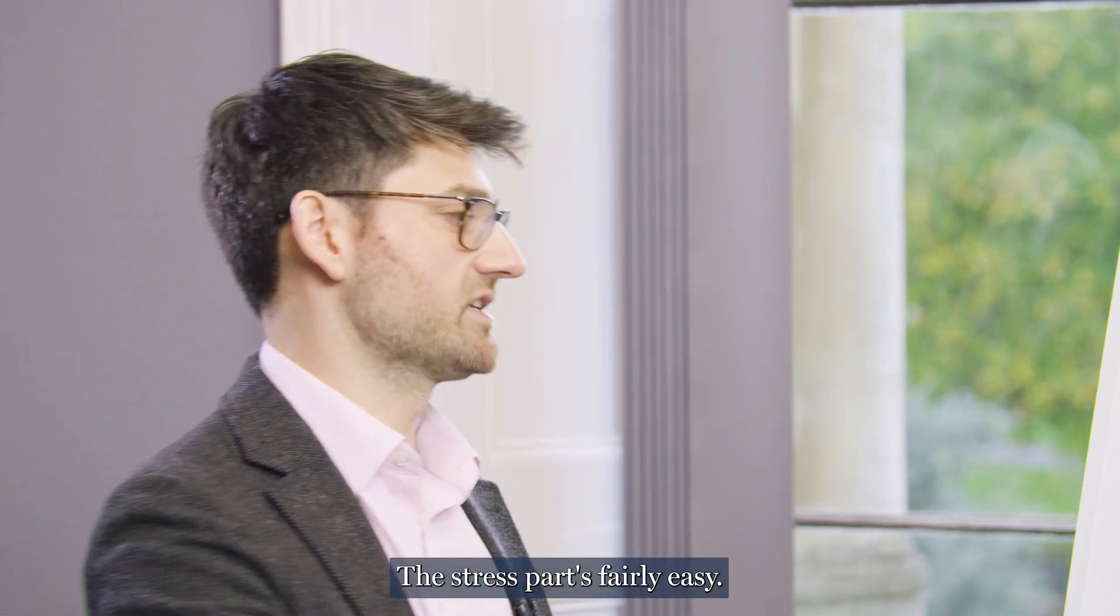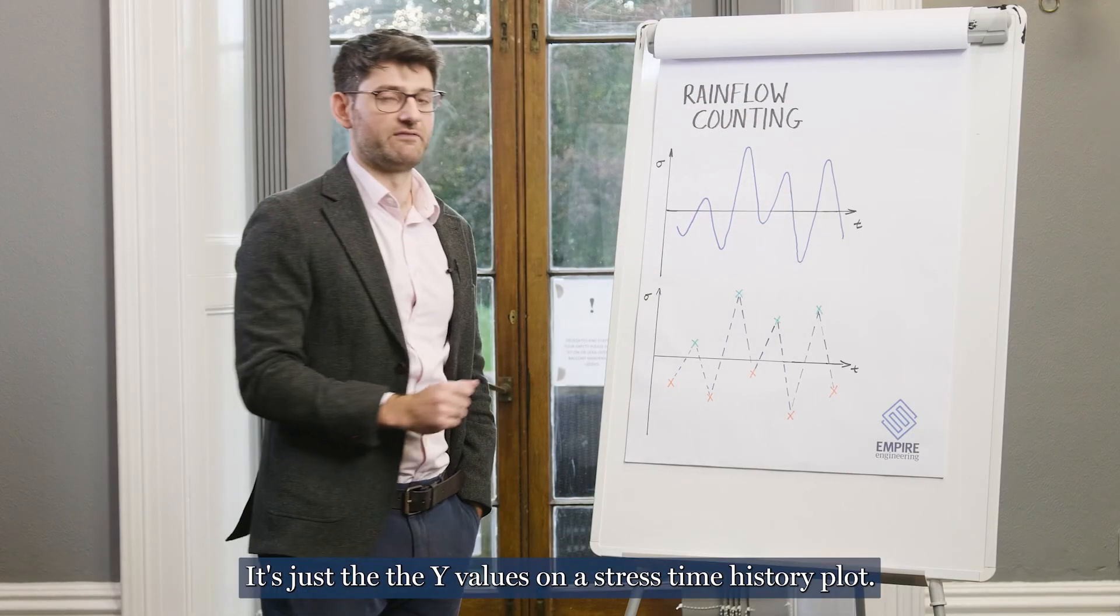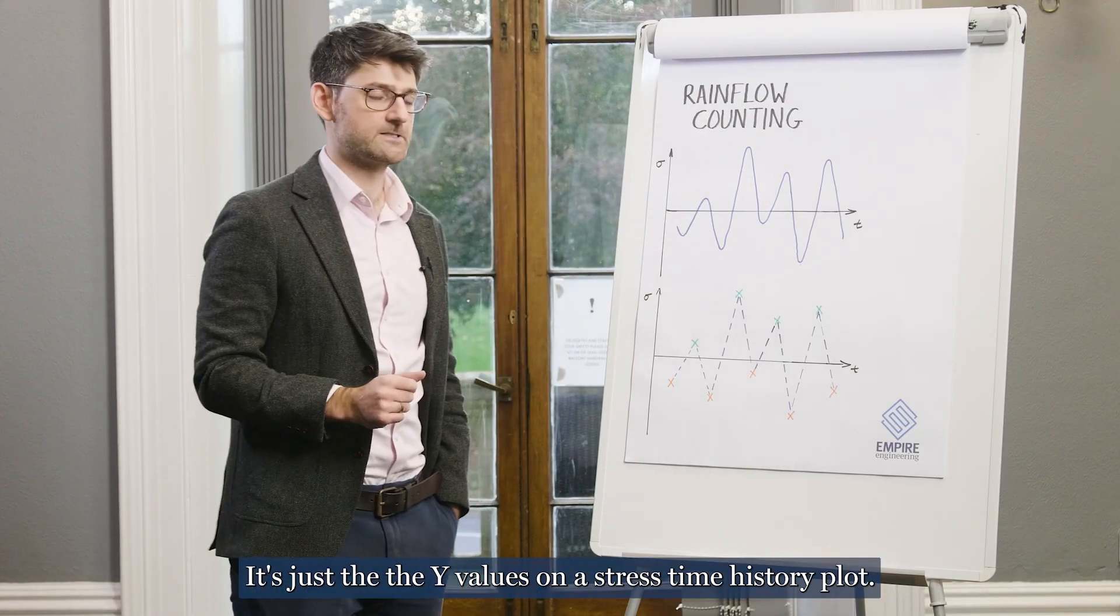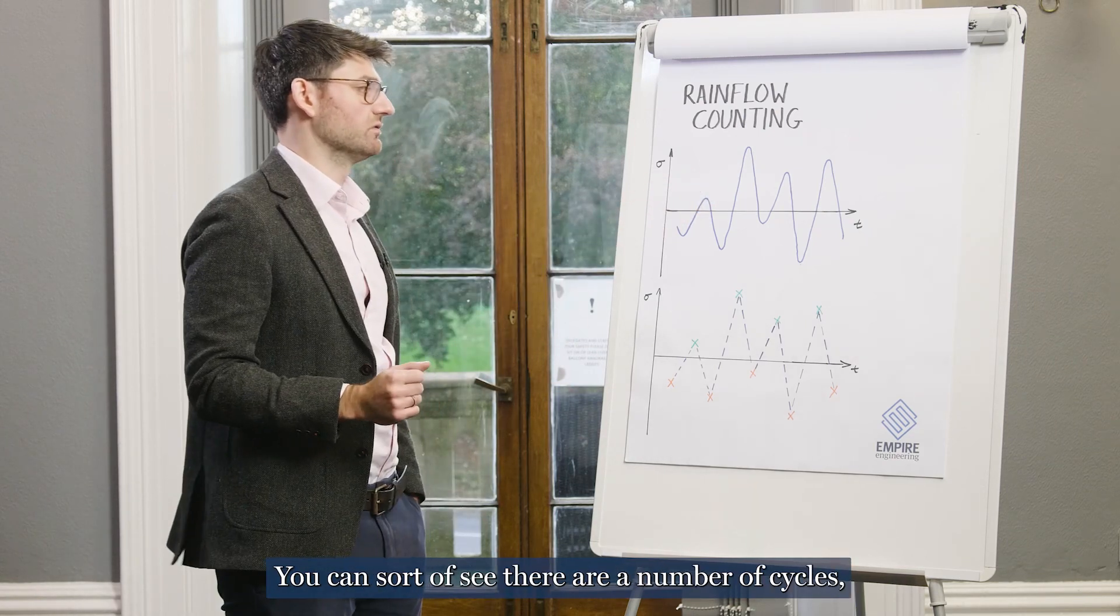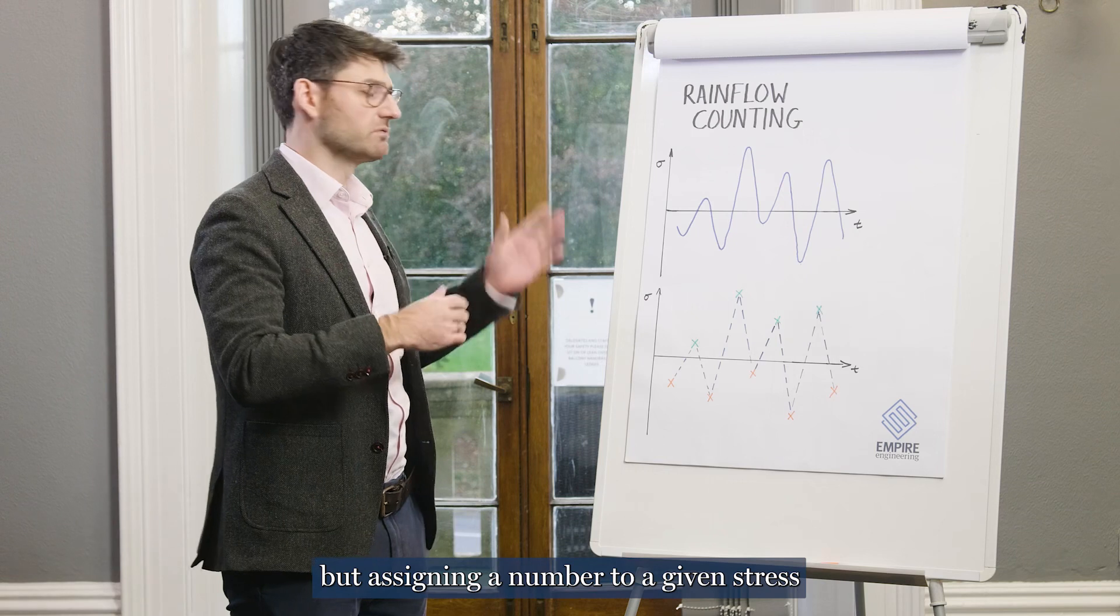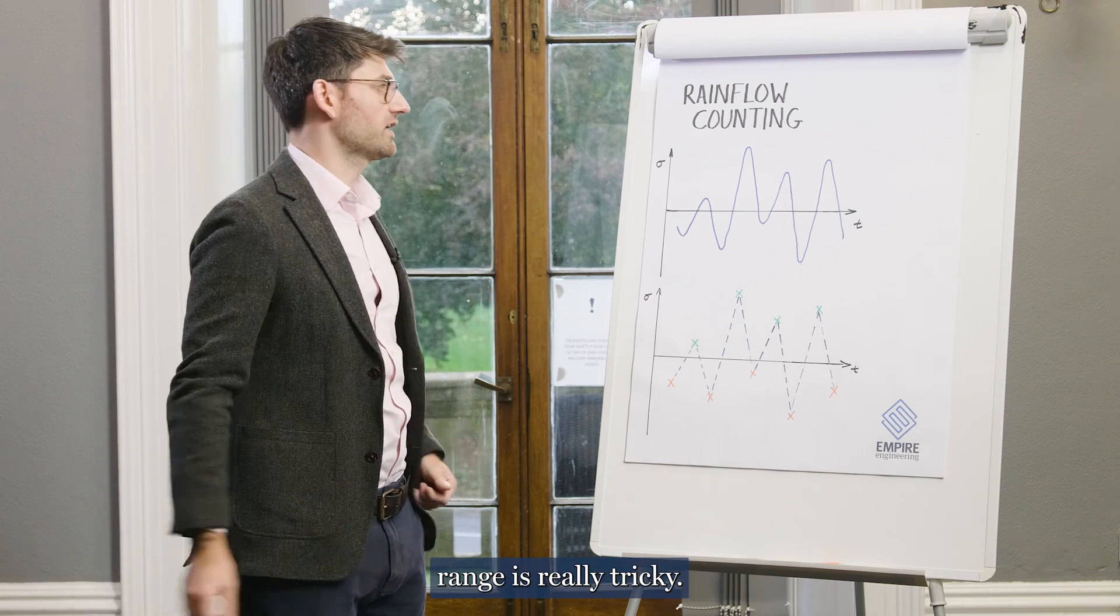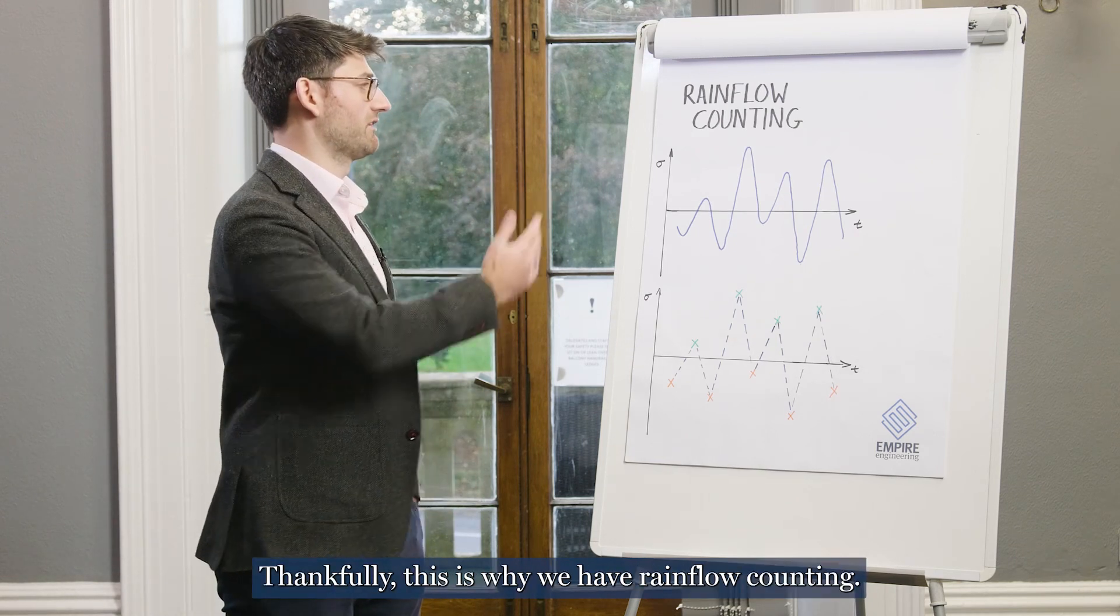The stress part's fairly easy. It's just the Y values on a stress time history plot. However, the N is a little harder to extract. You can sort of see there are a number of cycles, but assigning a number to a given stress range is really tricky. Thankfully, this is why we have rainflow counting.